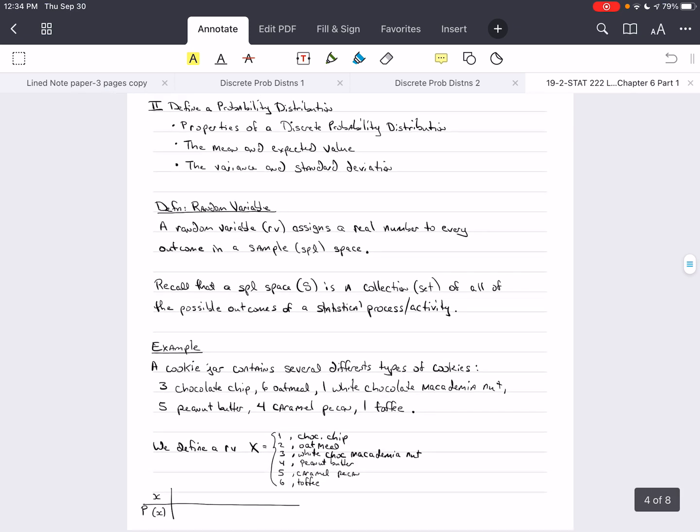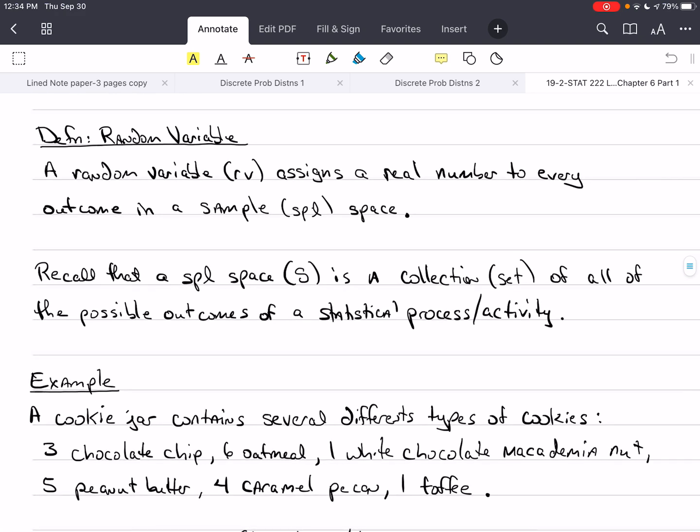Let's get started and talk about a random variable. I'm going to give you a definition that's a little different than the book because I believe it's important for us to have a better understanding of a random variable. A random variable, and we use small letters RV, assigns a real number to every outcome in a sample space. A sample space, and we use capital S for this, is a collection or a set of all the possible outcomes in some statistical process or activity.